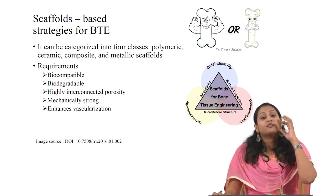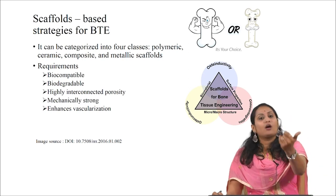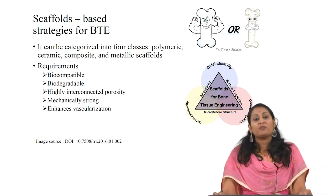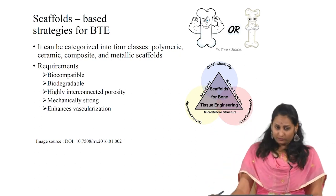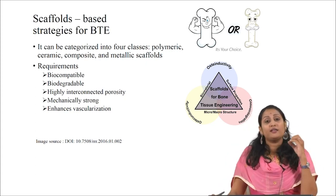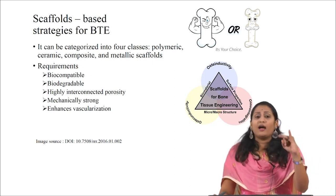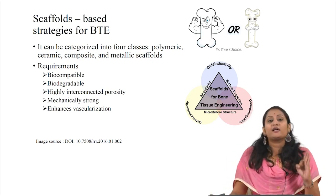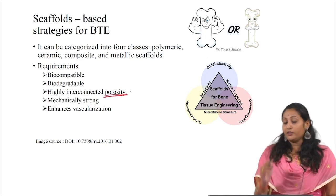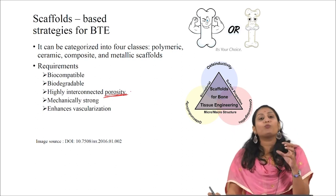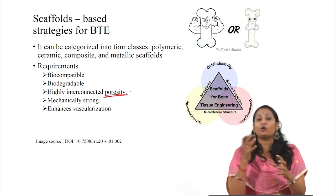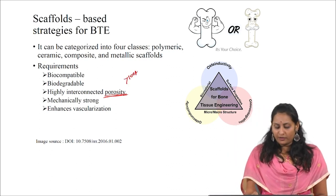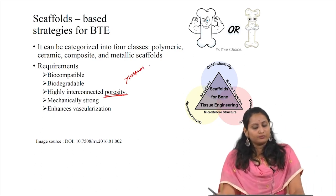Since the scaffold is the masterpiece of bone tissue engineering, we should be careful in selecting scaffold properties and materials. Scaffolds can be categorized into four classes: polymeric, ceramic, composite, or metallic scaffolds. Polymeric scaffolds can be derived from either natural or synthetic polymers; composites may be the combination of polymers and ceramics. The requirements of an ideal scaffold: it should be biocompatible, it is a temporary implant (not permanent), it is non-toxic, and it should have highly interconnected porosity. The pore size is very important for cells to enter, proliferate and differentiate, and also for the diffusion of nutrients and waste. Pore diameter should be greater than 100 micrometers.